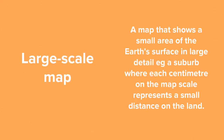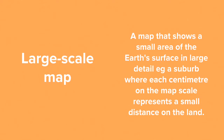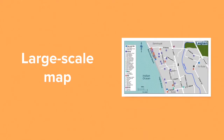But what about that large-scale map? It's a map that shows a small area of the Earth's surface in large detail — for example, a suburb where each centimetre on the map scale represents a small distance on land. An example of a large-scale map is seen here in Léguien, on the west coast of Bali.